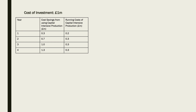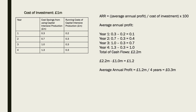So there are the numbers. Cost of investment is £1 million, and we've got some cost savings and running costs. Now note those cost savings are cash inflows effectively and those running costs are cash outflows effectively. The ARR formula is: average annual profit — profit being revenue minus costs — divided by the cost of investment, times by 100, because you express it as a percentage.